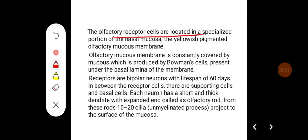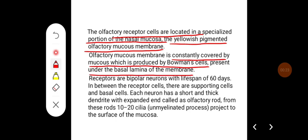The olfactory receptors are located in a specialized portion of the nasal mucosa, the yellowish pigmented olfactory mucous membrane. Olfactory mucous membrane is constantly covered by mucous which is produced by Bowman's cells present under the basal lamina of the membrane.